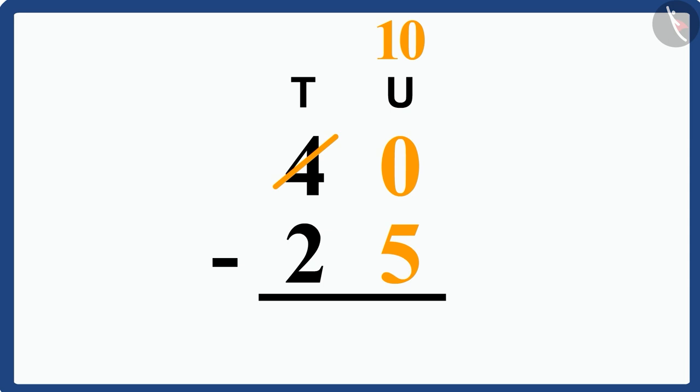After borrowing, our 0 becomes 10 and 4 becomes 3. Now, after subtracting 5 from 10, we will get 5. We will write it like this, below the unit's place.